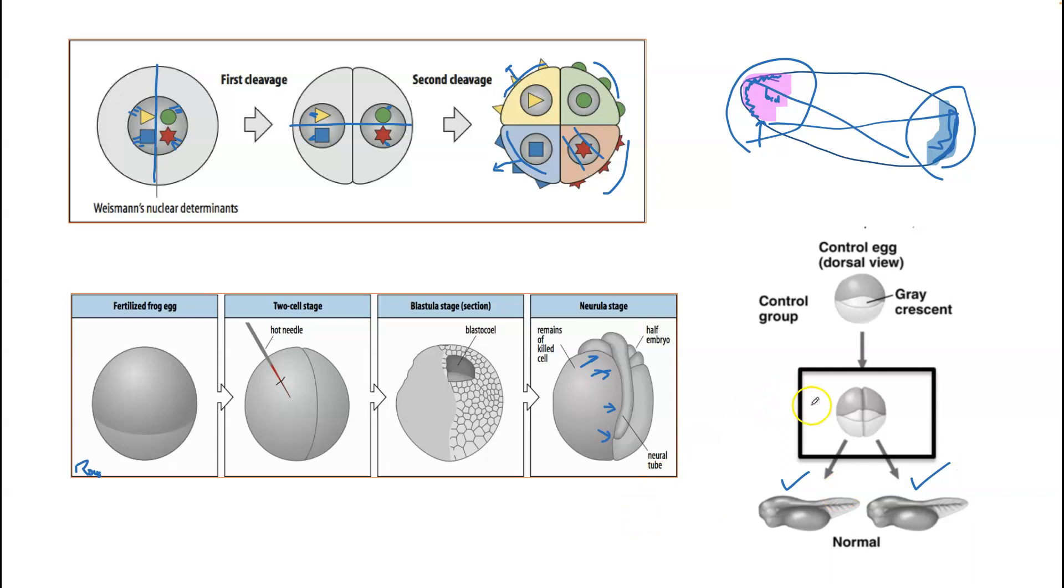He was able to develop two normal tadpoles. There's a difference between these two in that signaling information was still present here to dictate what this half of the embryo was going to do. But frog embryos too, in the early stages, so long as you divide them in the right way—and we'll talk about this when we talk about frog development—you can get two fully formed and perfectly normal embryos.